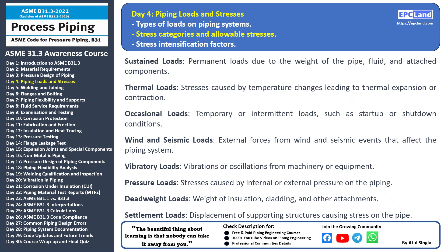Secondary stress occurs due to temperature-related changes. When the pipe expands or contracts because of temperature variations, it generates secondary stress. These stresses are usually transient and occur during start-up or shut-down. Occasional stress comes from temporary or intermittent loads — these are non-permanent conditions such as those experienced during system start-up, shut-down, or other irregular operations.